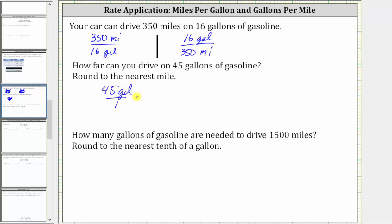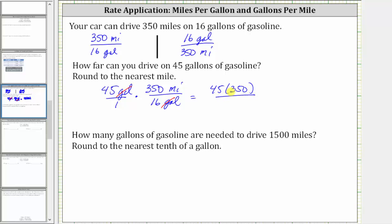And now if we multiply by the rate of 350 miles per 16 gallons, notice how we have the units of gallons divided by gallons, and therefore the units of gallons simplify out, leaving us with miles. So now multiplying, in the numerator we have 45 times 350. In the denominator, we have one times 16, which is 16. And now the units are miles.